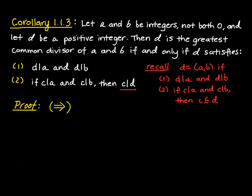We'll start with the forwards direction, which means we're going to start by proving that if D is the greatest common divisor of A and B, then these two criteria are satisfied. So first, let's just say that D is the greatest common divisor of two integers A and B.